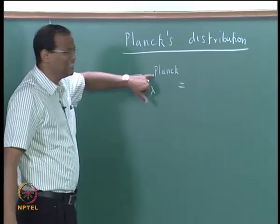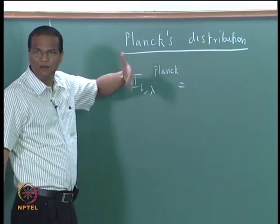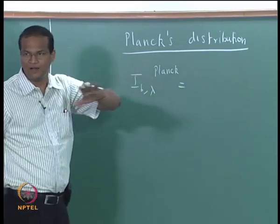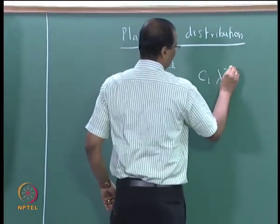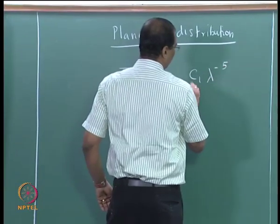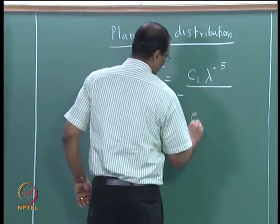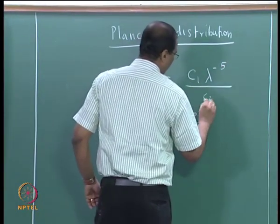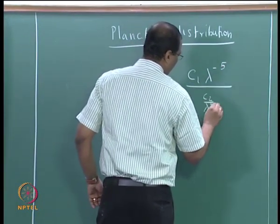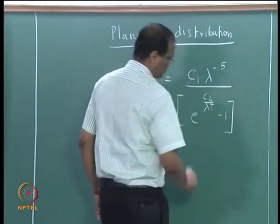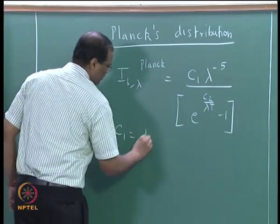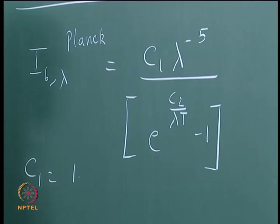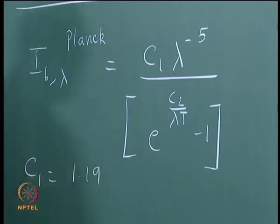From now on we will jettison the 'Planck' label — i_b_lambda means it is only Planck. C1 was 1.198 — is it? — 19.